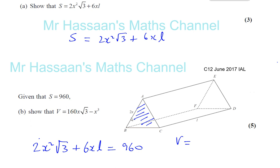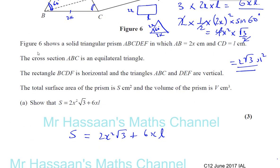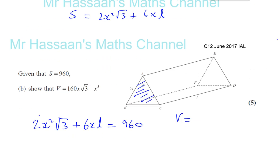So the volume would be, it's the area of one of these. Now we found the area of two of these. The area of two of these is 2 root 3 x squared, that was the area of two of them, so the area of one of them is going to be root 3 x squared. So the area of one of them is root 3 times x squared. Okay, so the volume would be x squared times root 3 times your l, which is your length, that's the volume.